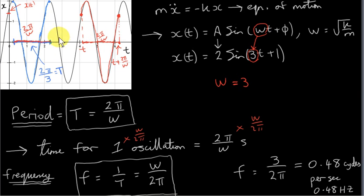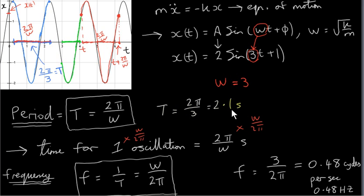Looking at the graph over a time interval of one second — say from three to four seconds — this green portion represents 0.48 of a full cycle, roughly half of a full cycle. If we double that time interval we'll have nearly a full cycle. The period was 2.1 seconds, so 1 divided by 2.1 is 0.48 — it all makes sense. In one second we cover roughly half a cycle; in about 2.1 seconds we complete a full cycle.